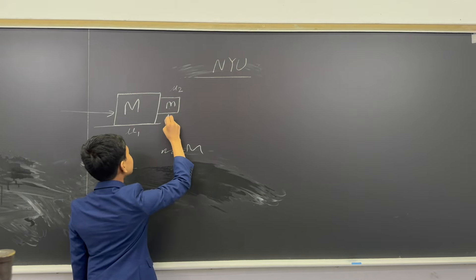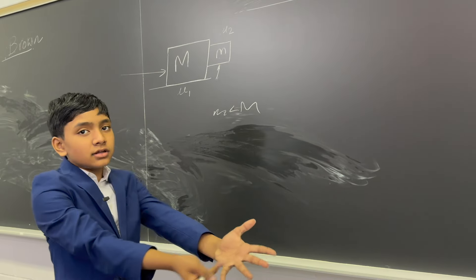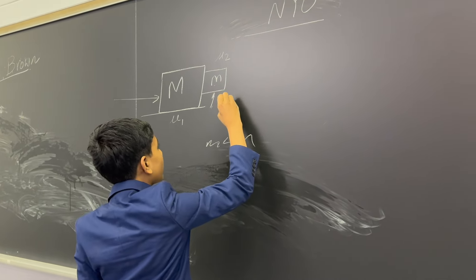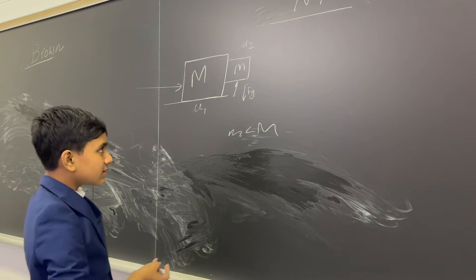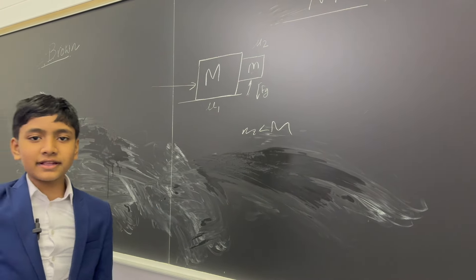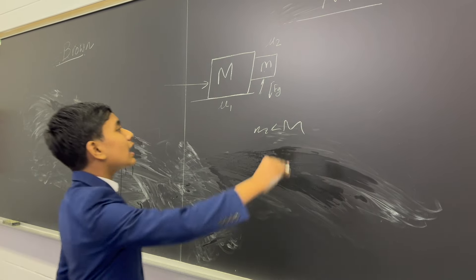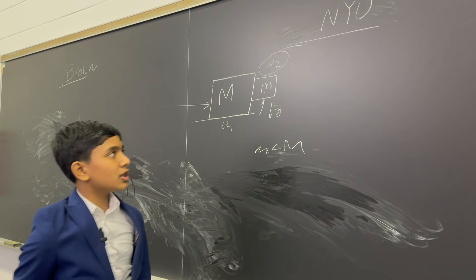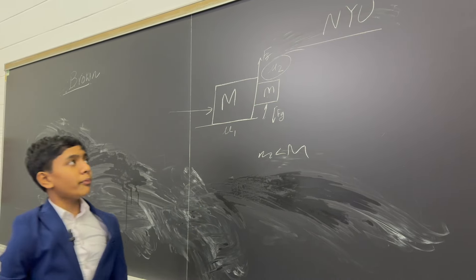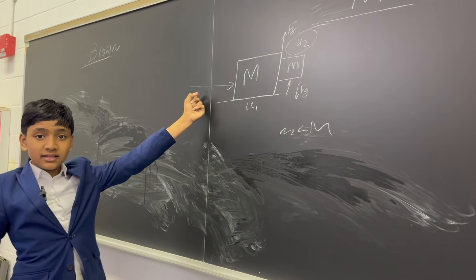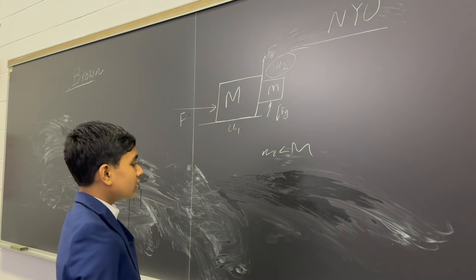What would be the minimum applied force so that the small mass remains static? We're trying to find the amount of horizontal force required to keep this small mass m stationary. You might be thinking that's not possible because this mass is being pulled by gravity and a horizontal force isn't going to push anything up. But I'm here to tell you that's not true.